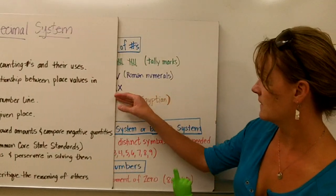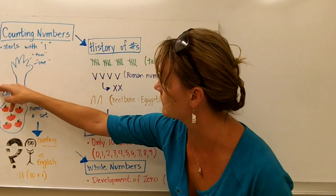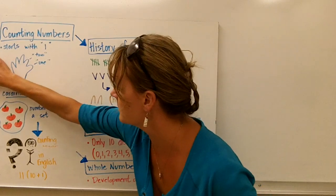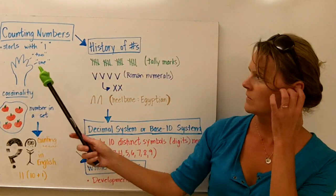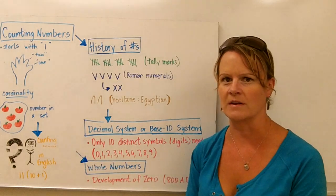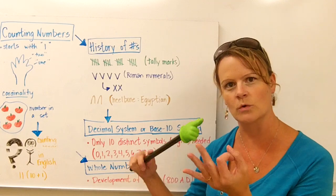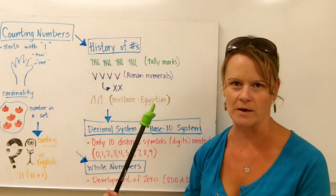So we're going to start with talking about the counting numbers. When we talk about the counting numbers, we're talking about the numbers that start with one. If you think about a toddler, when a toddler is learning to count, they simply count on their fingers like this: one, two, three. Those are the counting numbers. They just start with one.